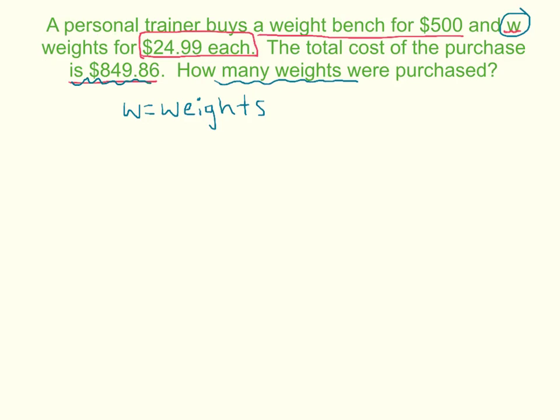And let's see, there's a one time buy, and then we're buying multiple things. So the one time buy is the weight bench. $500 for the weight bench, plus we're buying $24.99, but that's per weight. So we're multiplying by the number of weights, and that will give us our total, which is $849.86.